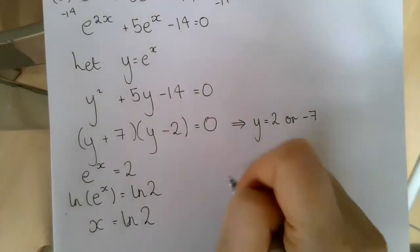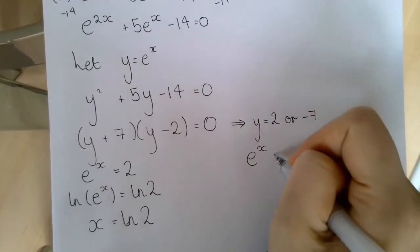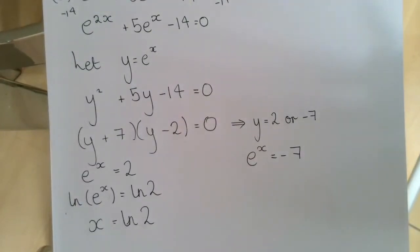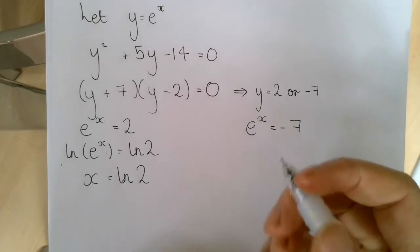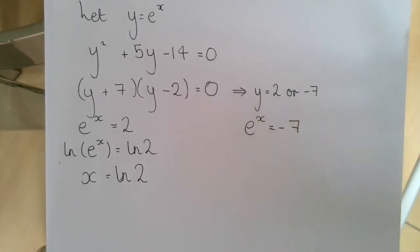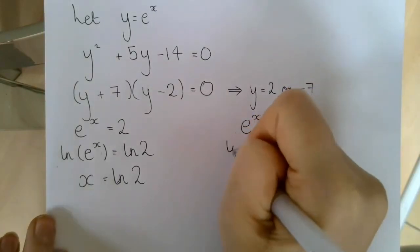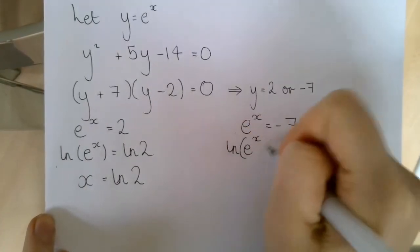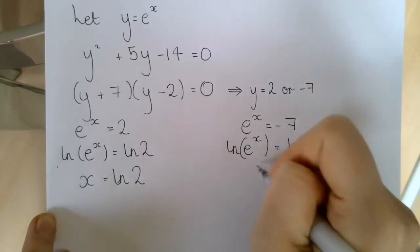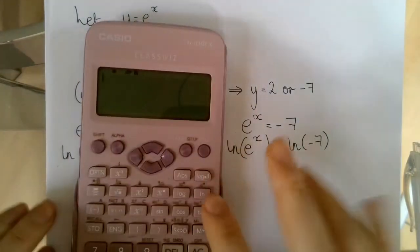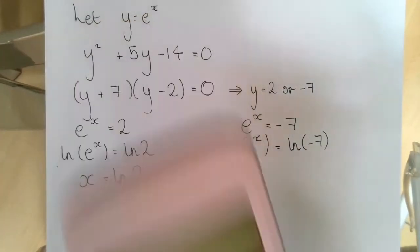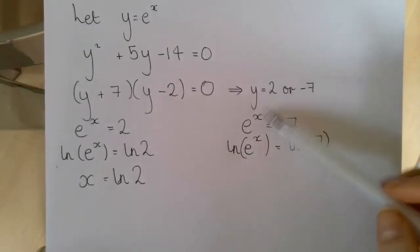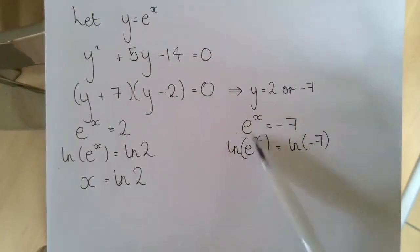Similarly, if e to the power of x equals −7, we need to examine that answer. Can we ever raise a number to a power and get a negative result? We can't. If you hadn't realised that and tried to take the logarithm of each side, typing ln(−7) into your calculator gives a math error — because you cannot take the logarithm of a negative number; e to the power of x will never equal a negative number. So our only solution is x equals ln 2.